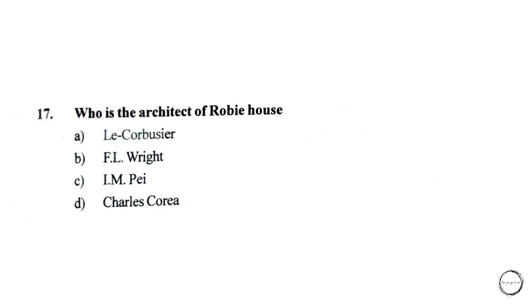Moving on, who is the architect of Robie House? Options are: A) Le Corbusier, B) F.L. Wright, C) I.M. Pei, D) Charles Correa. The right answer is option B, F.L. Wright.